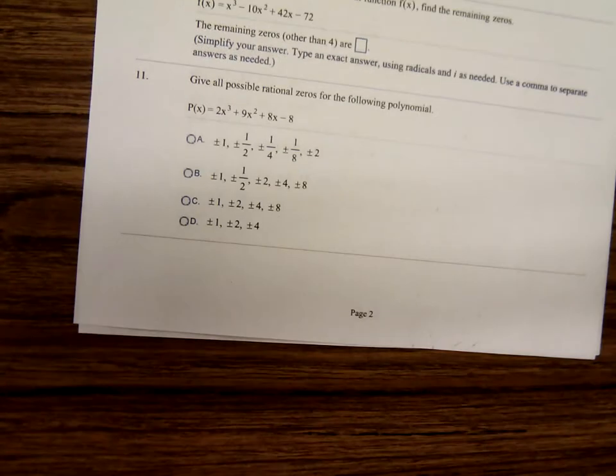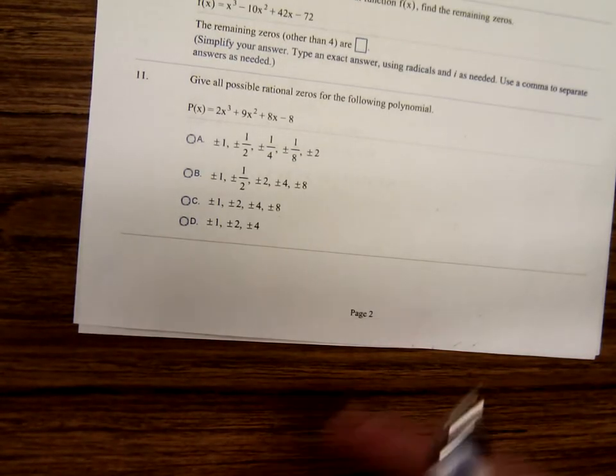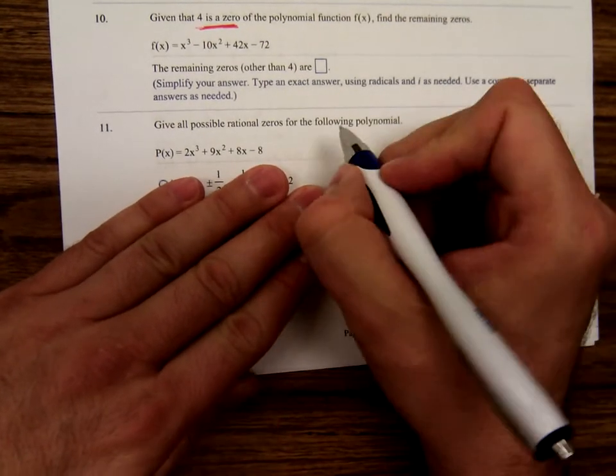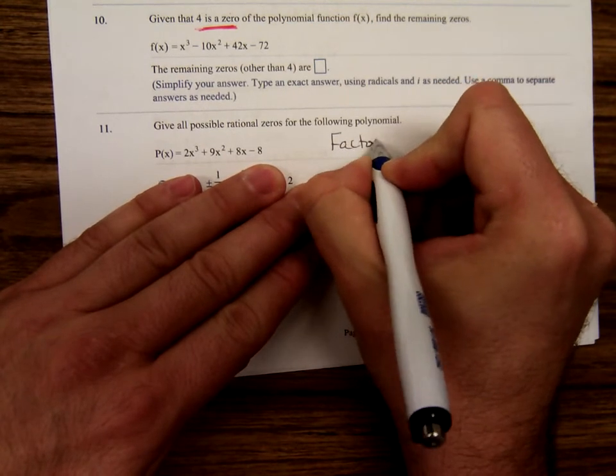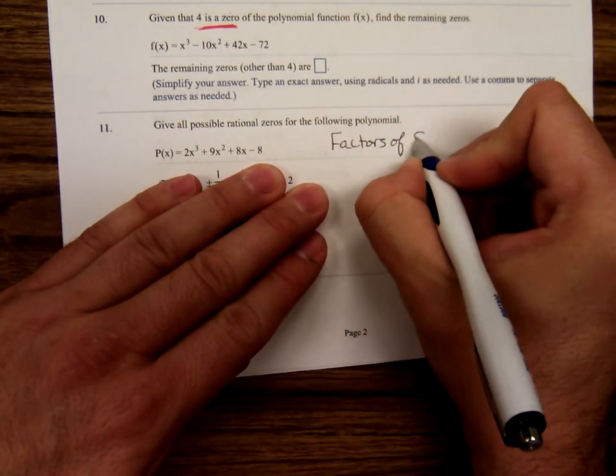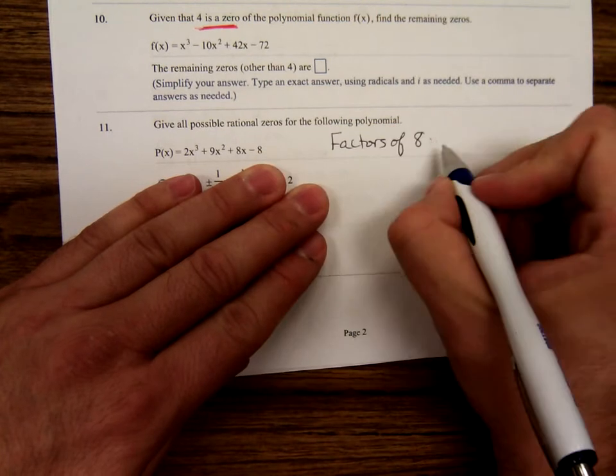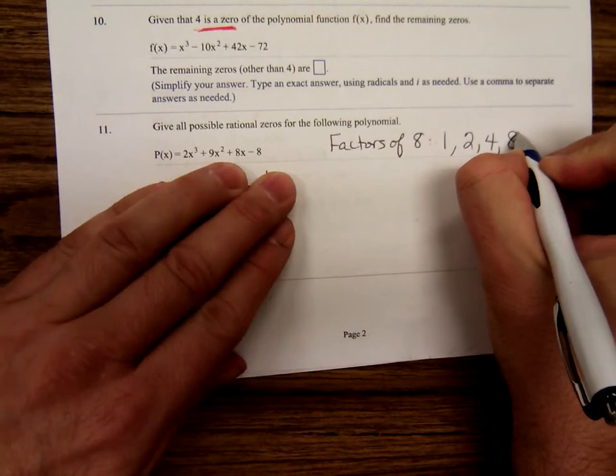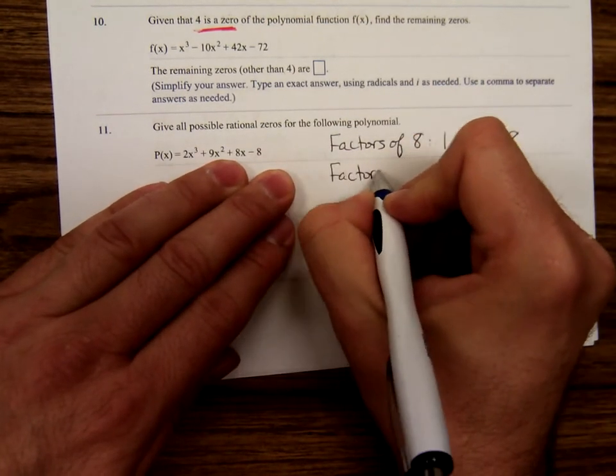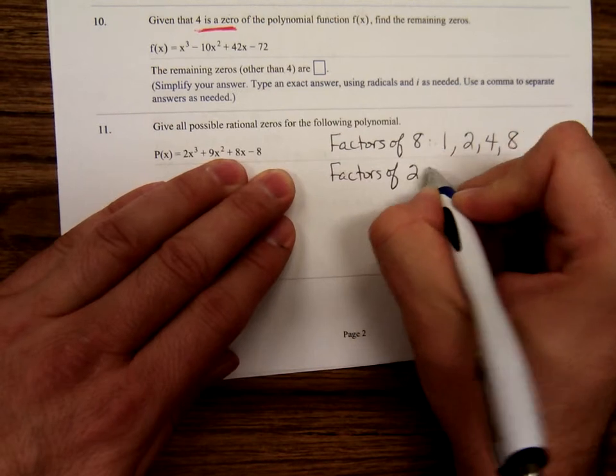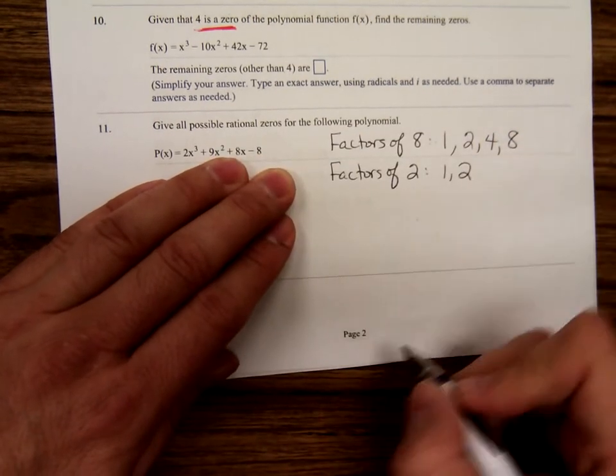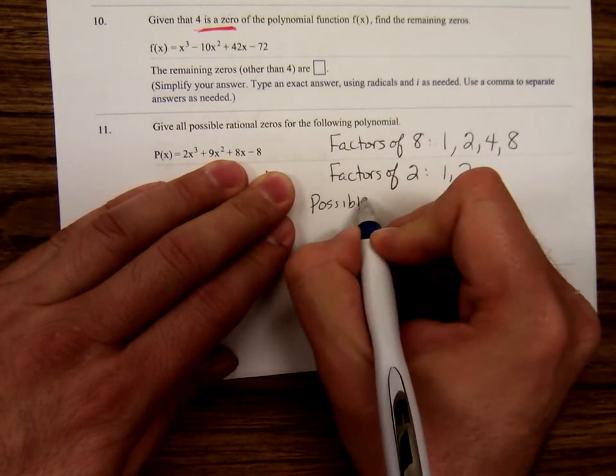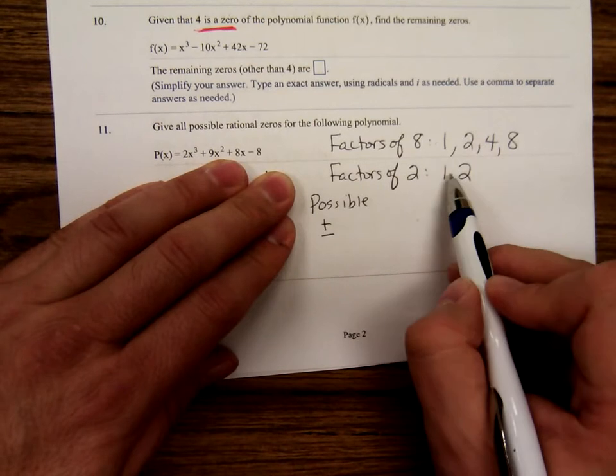So, to do this problem number 11, list all the possible rational zeros. Well, it's multiple choice, try not to look that bad, okay? You start off writing out the factors of 8. That's the constant term, don't worry with the minus. Well 1, 2, 4, and 8. Then the factors of the leading coefficient 2, well just 1 and 2. They're all the possible in this form.